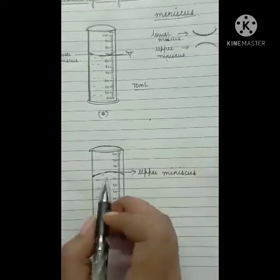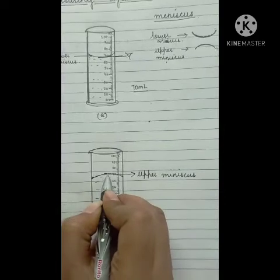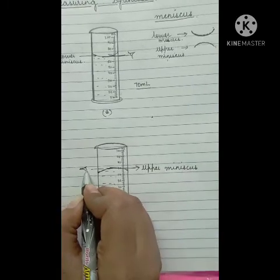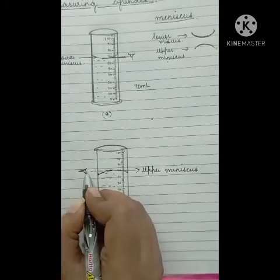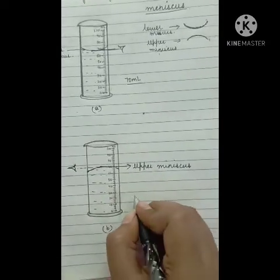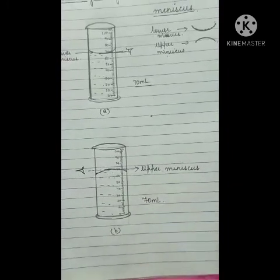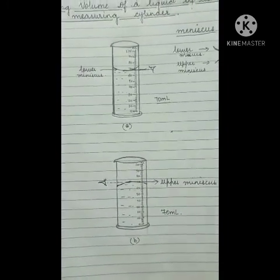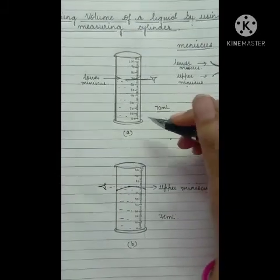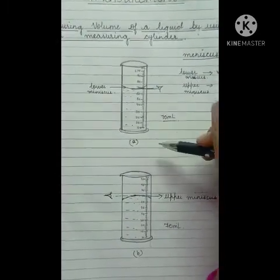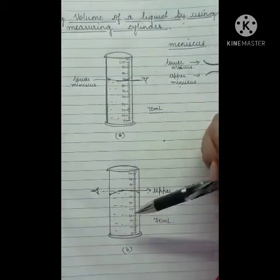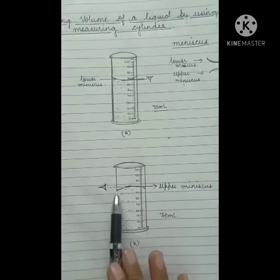Keeping your eye in line with the container, you will observe that the reading is 73 milliliters. The very important point is: first check whether the liquid forms a lower meniscus or an upper meniscus. If lower, take reading from the lower meniscus; if upper, take reading from the upper meniscus.